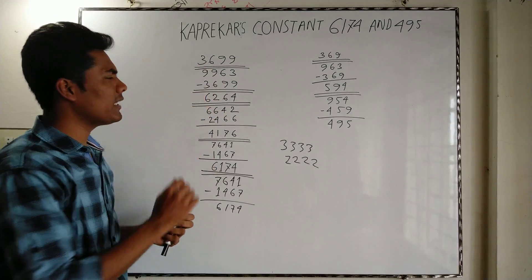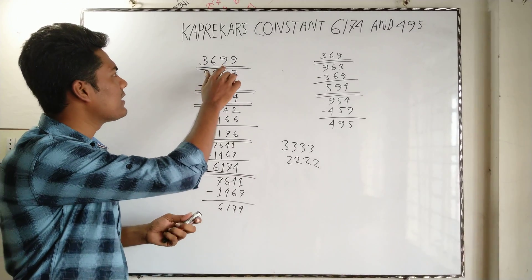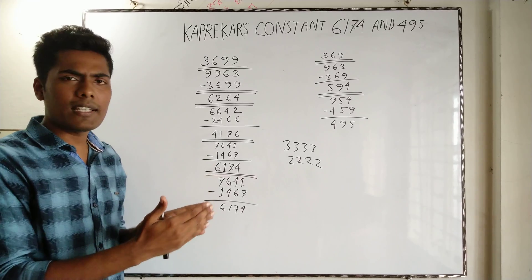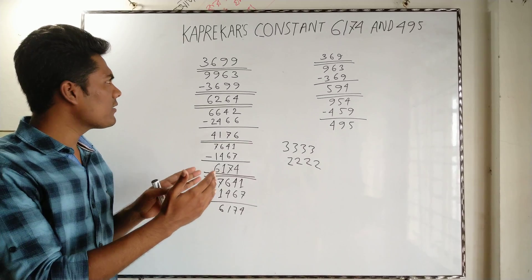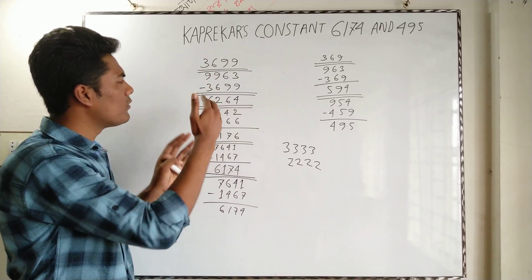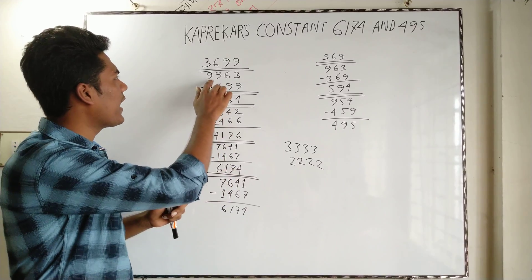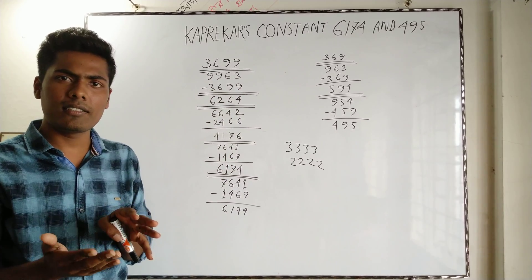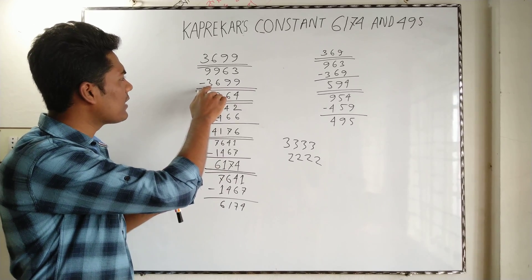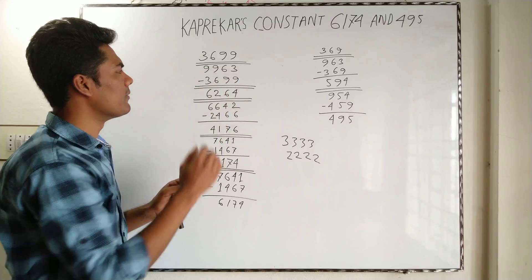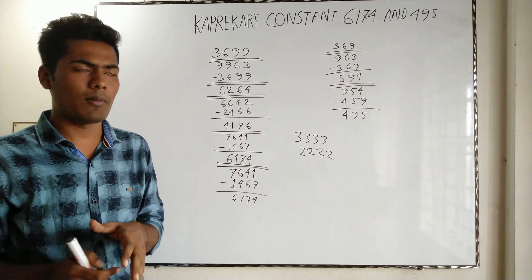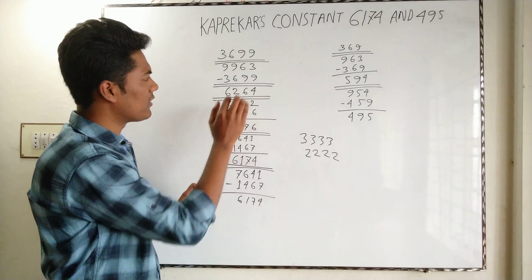For example, I choose the four-digit number 3699. We rearrange this number from largest to smallest to get 9963, and then rearrange it from smallest to largest to get 3699. Then we subtract the smallest from the largest, and we get 6264.